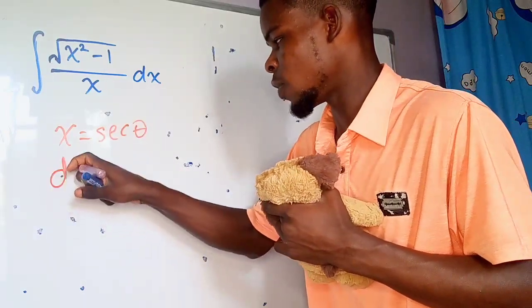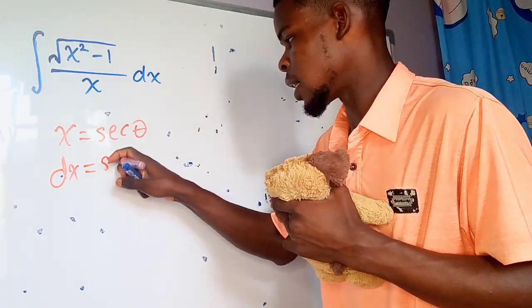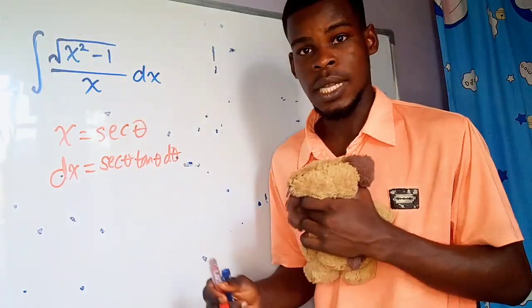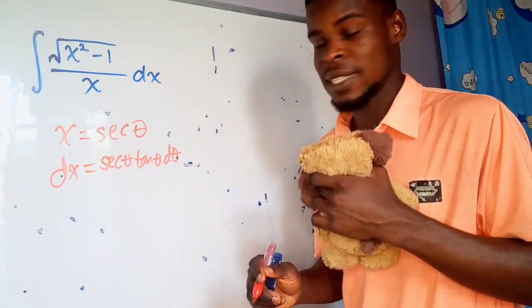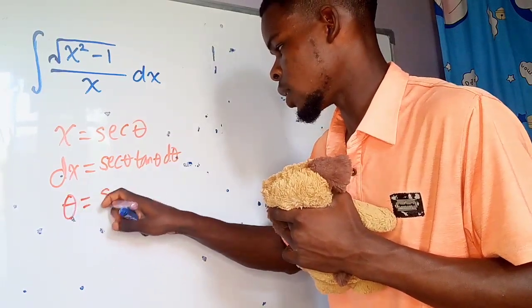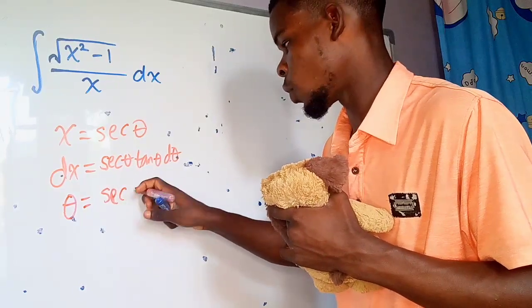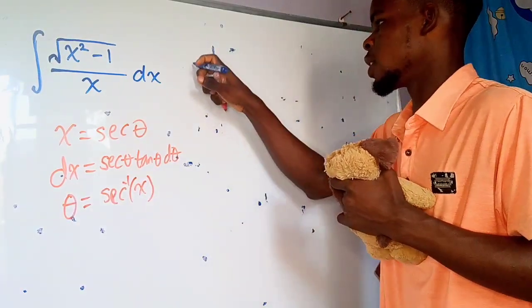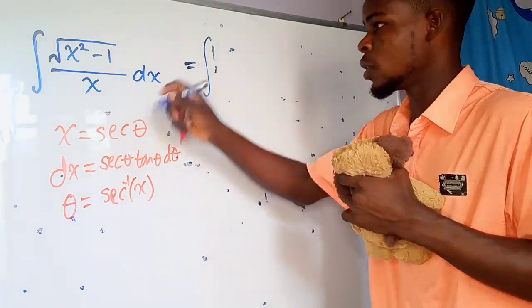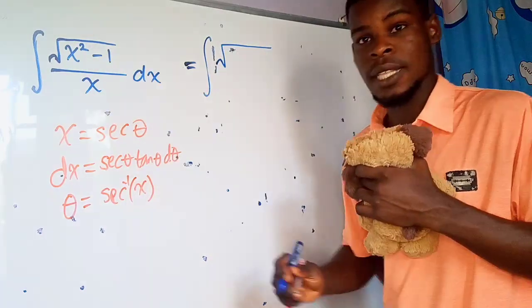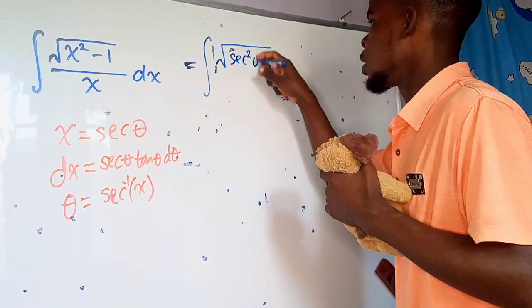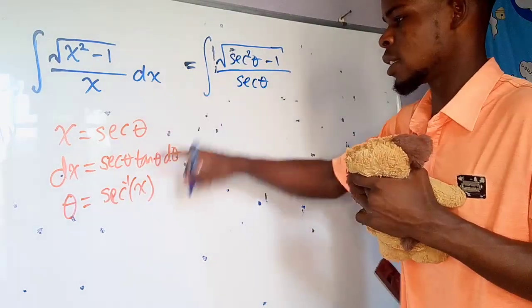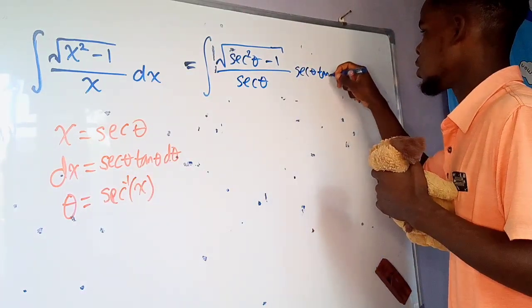When we have that, we now take the derivative of both sides with respect to theta. The derivative of secant theta is secant theta times the tangent of theta dθ. Now, if x is secant theta, we can make theta the subject by taking secant inverse of both sides, which means theta will be secant inverse of x. Let's plug this back into the integral. This is going to be the integral of the square root of secant squared theta minus 1, divided by x, which is secant theta, and then dx, which is secant theta times tangent theta dθ.